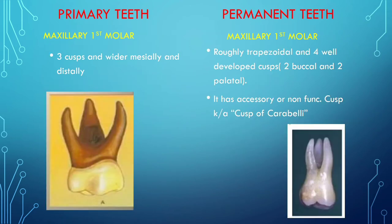When talking about the maxillary first molar, in primary dentition it has three cusps and is wider mesiodistally. In permanent dentition, it is roughly trapezoidal with four well-developed cusps, plus one accessory non-functional cusp known as the cusp of Carabelli. Detailed videos on specific teeth like the maxillary first molar are available in other videos on the channel.